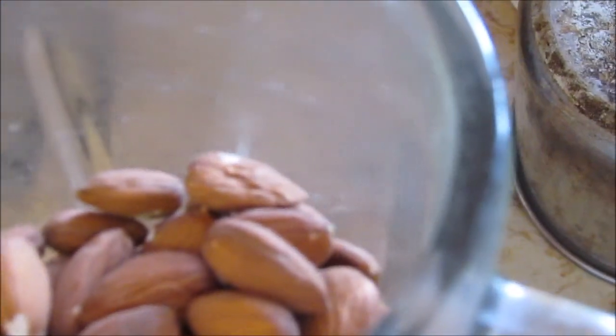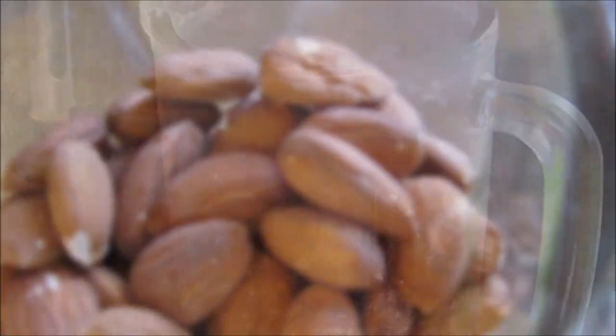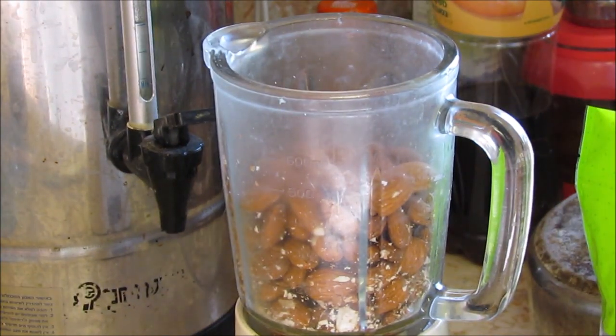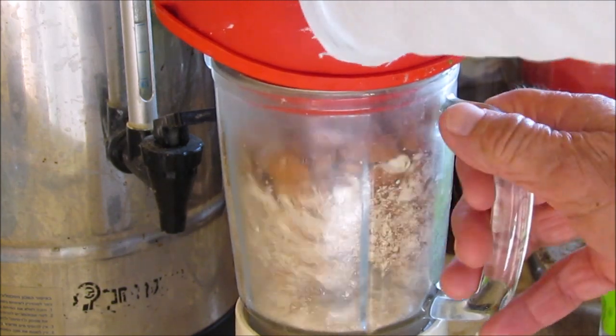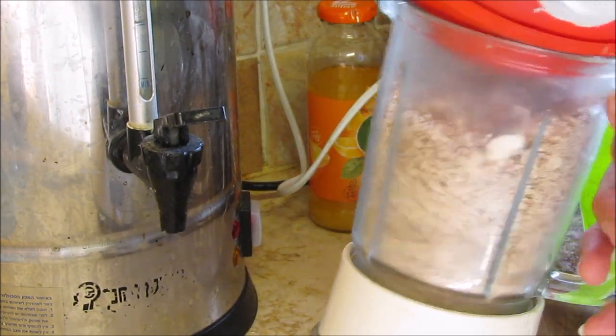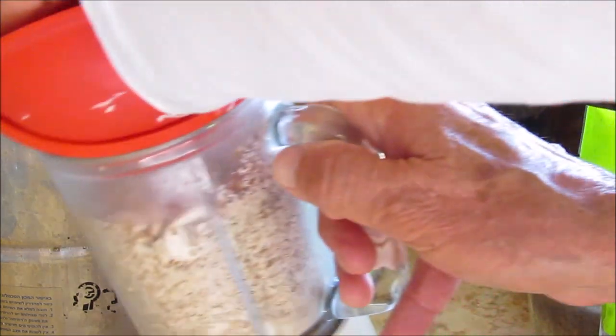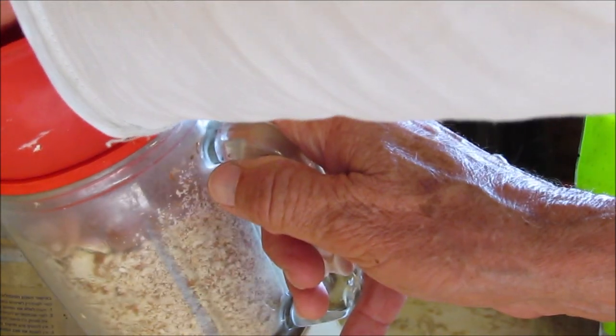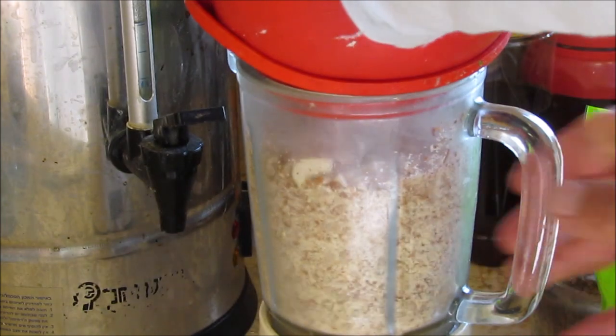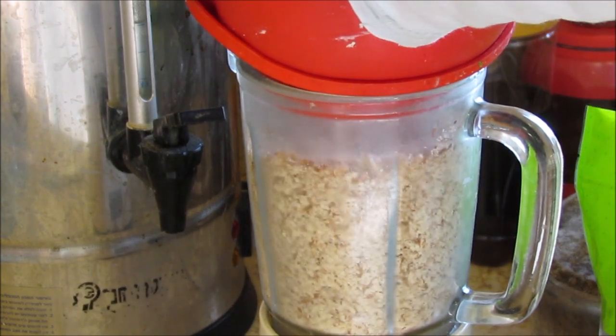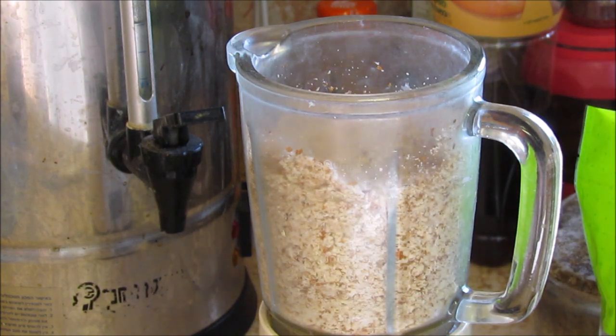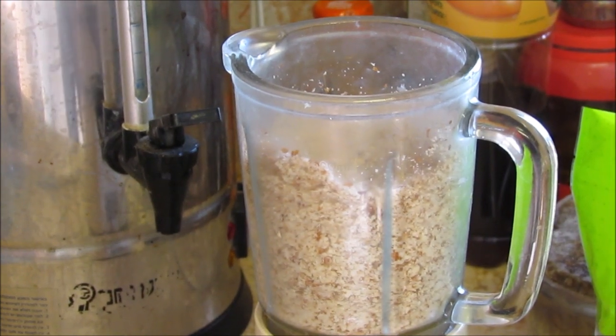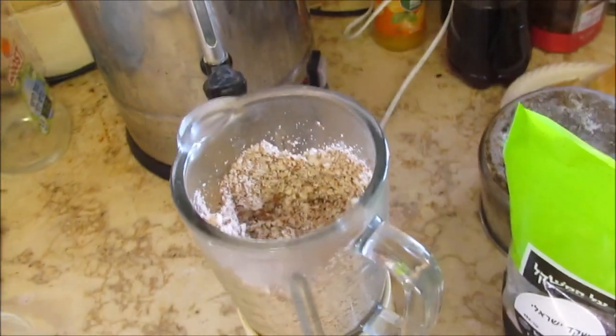Now we gonna add 200 grams into the blender, which are approximately two handfuls of almonds. I'll start the blender not for too long because I wanna keep the almond grainy. I wanna feel its taste in the cookie and that's how it looks.